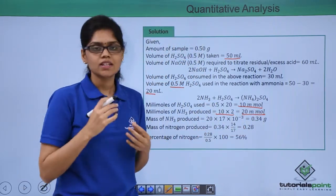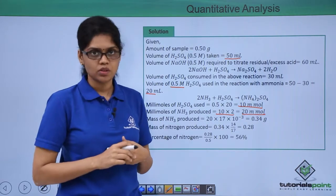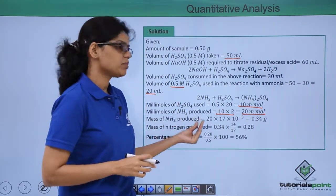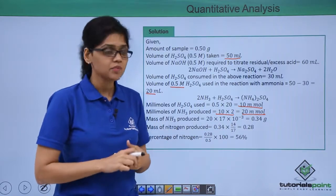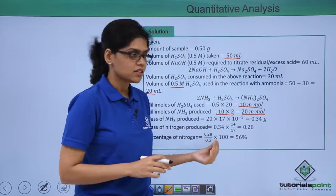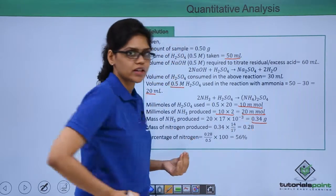From this you can easily calculate the mass of ammonia produced, that is simply obtained by multiplying molarity with the gram molecular mass of ammonia, that is 20 into 17 into 10^-3 giving us 0.34 gram.